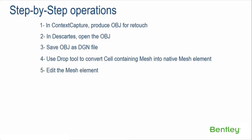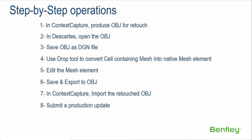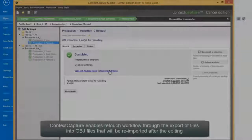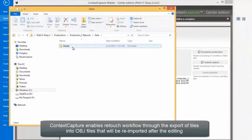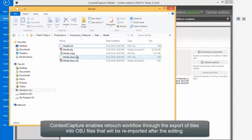Step 5: Edit the mesh element. Step 6: Save and Export to OBJ. Step 7: In Context Capture, import the retouched OBJ. Step 8: Submit a Production Update. Context Capture enables a retouched workflow through the export of tiles into OBJ files that will be re-imported after the editing.